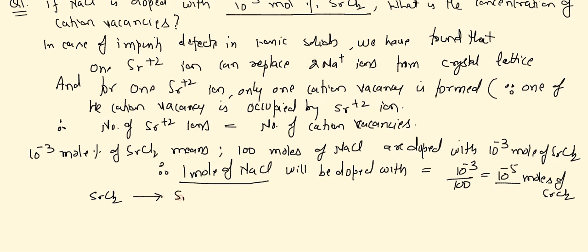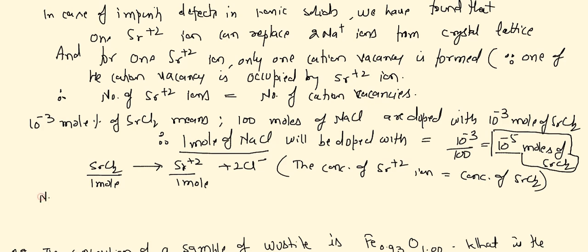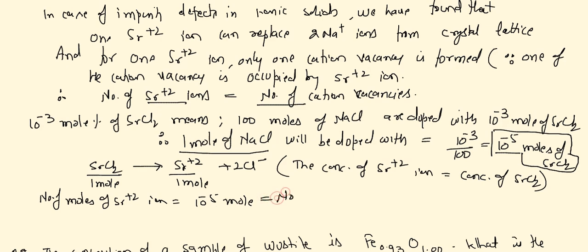When SrCl₂ ionizes, it gives Sr²⁺ ions plus 2 Cl⁻ ions. The concentration of Sr²⁺ ions equals the concentration of SrCl₂, because 1 mole of SrCl₂ produces 1 mole of Sr²⁺ ions. So, number of moles of Sr²⁺ ions = 10⁻⁵ mol, which also equals the number of cation vacancies = 10⁻⁵ mol.